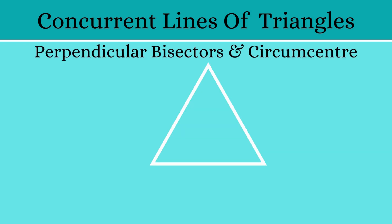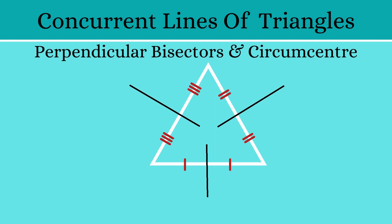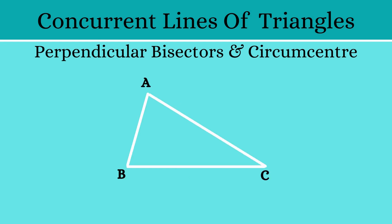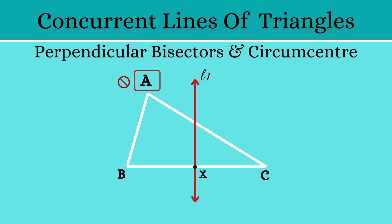Next are perpendicular bisectors. Perpendicular bisectors are lines which bisect the sides of the triangle and are perpendicular to them. Let's consider triangle ABC. We'll mark the midpoint of BC as X. The perpendicular bisector of BC is a line which is at 90 degrees to BC and passes through X. Let's name this line L1.